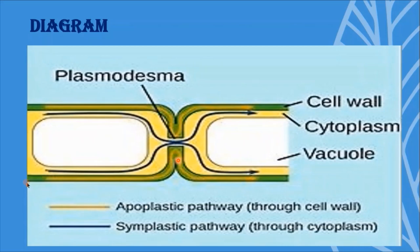In this cell wall, a pore is present. This pore allows the cell's cytoplasm to travel between cells. This pore is called plasmodesmata, or the pathway through which water and substances travel between cells.